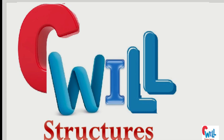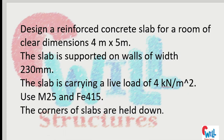Hello friends, welcome to my channel Civil Structures. Today we will design a two-way slab. Let's see an example. Design a reinforced concrete slab for a room of clear dimension 4 meter by 5 meter. The slab is supported on walls of width 230 mm. The slab is carrying a live load of 4 kilonewton per meter square. Use M25 and Fe415.